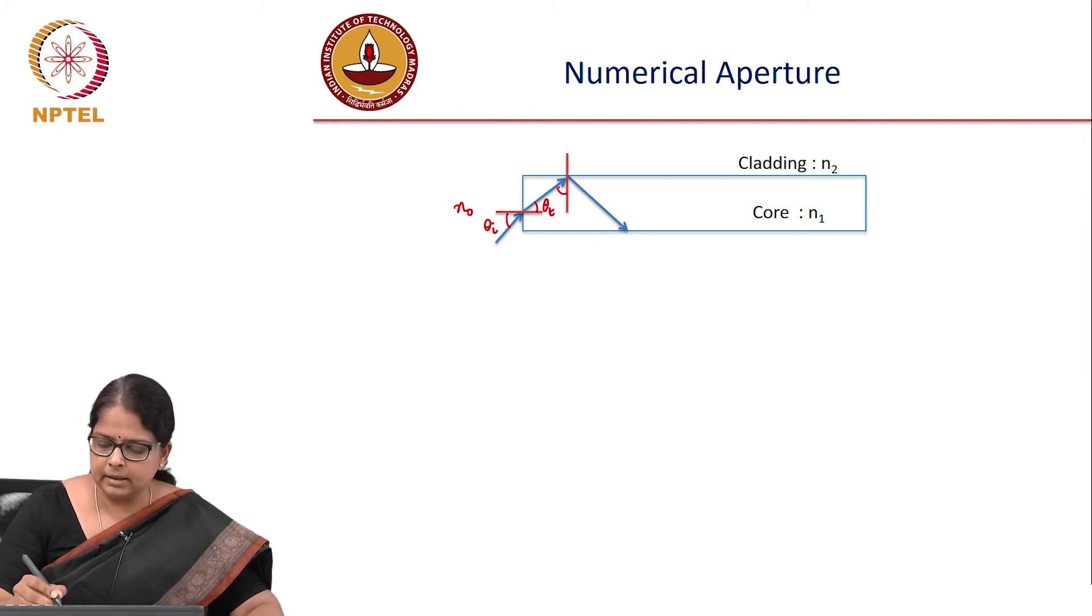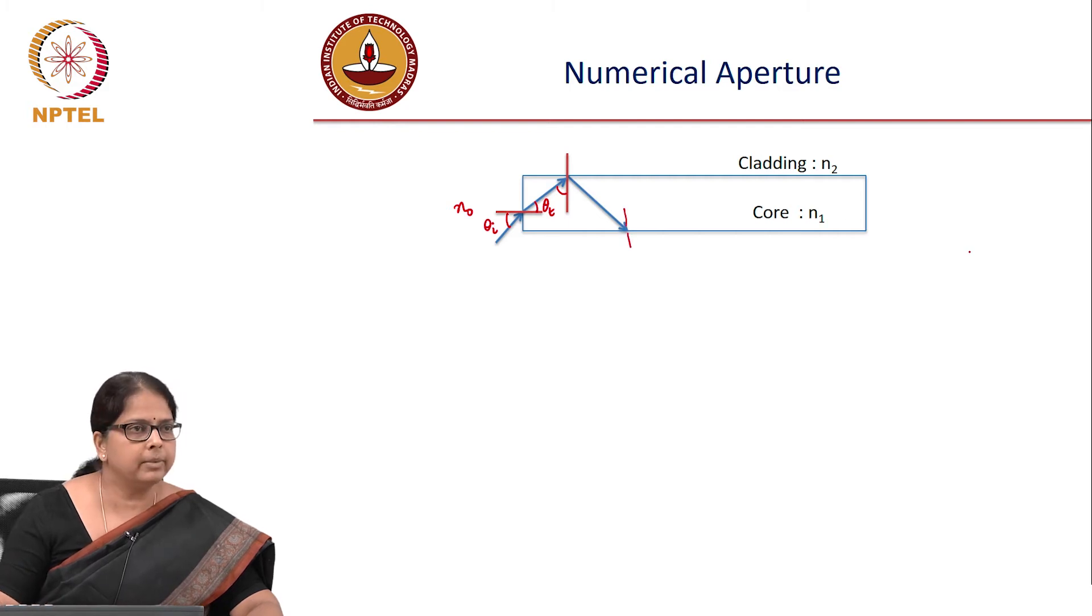If 90 degrees minus θₜ is greater than the critical angle at the core-cladding interface, then all light reflects back into the core. This continues through the fiber, and that's how light gets trapped. This is high school level understanding of light guidance in a fiber.